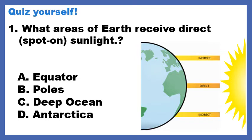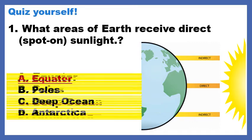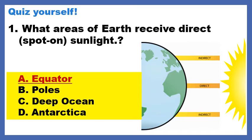5, 4, 3, 2, 1. I'm going to get rid of some answers. I'm going to get rid of the deep ocean, because there are some parts of the ocean that are so deep that sunlight never reaches it. I'm also going to get rid of Antarctica because that is just one of the poles and not both of the poles. And if I look where Antarctica would be at the bottom of the globe, it looks like it's getting indirect sunlight. So, the correct answer is the equator. At the equator, kind of the middle of the globe, the sunlight hits spot-on. It hits directly, and because of that, we have warmer temperatures.